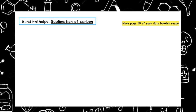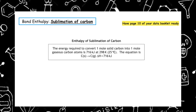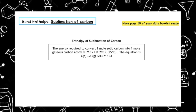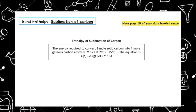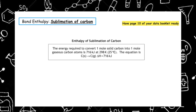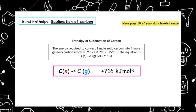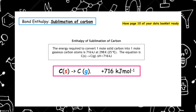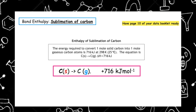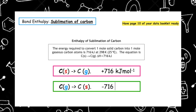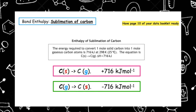At the bottom of page 10 of your data booklet there is a key definition: the enthalpy of sublimation of carbon. This is the energy required to convert one mole of solid carbon into one mole of gaseous carbon — 716 kJ mol⁻¹ — and an equation is given. When changing carbon from solid to gas, the enthalpy change is positive because we are breaking bonds. If the reverse reaction occurs — carbon gas to carbon solid — we flip the equation and the sign, giving −716 kJ mol⁻¹.